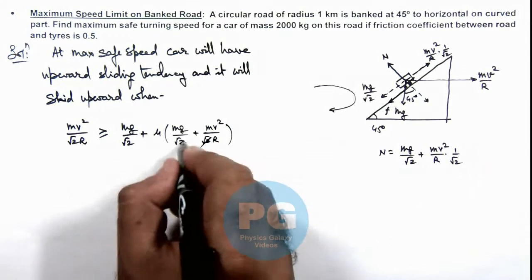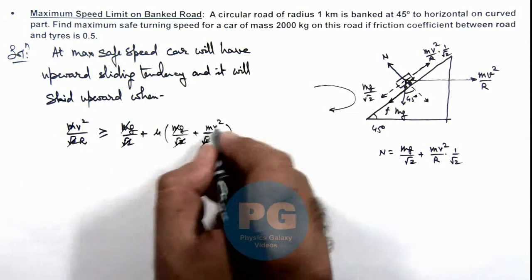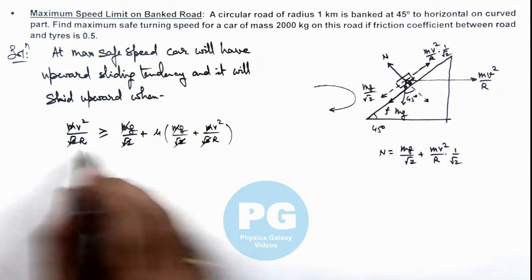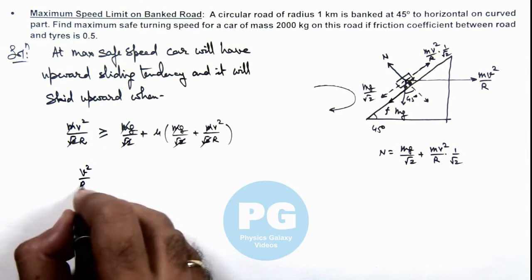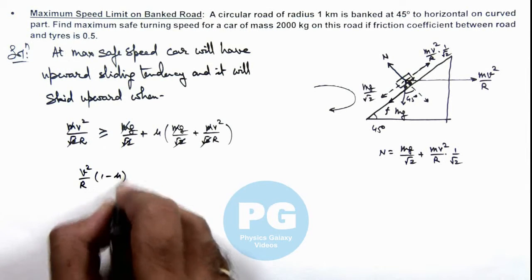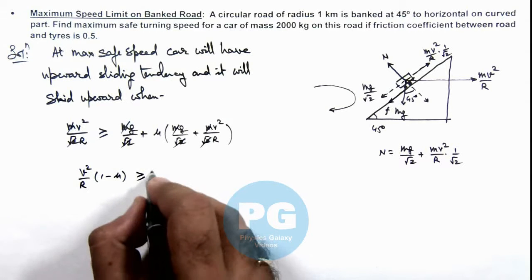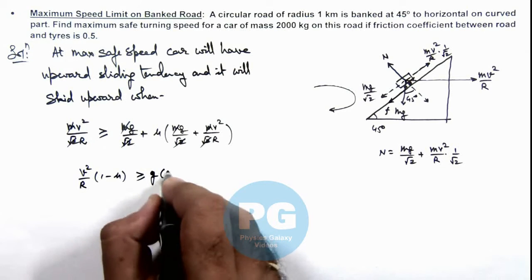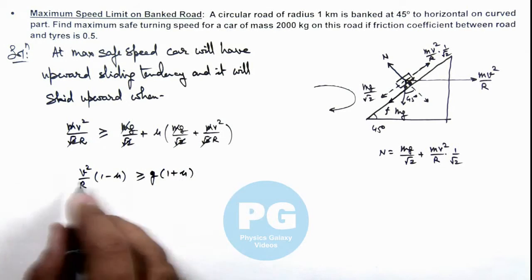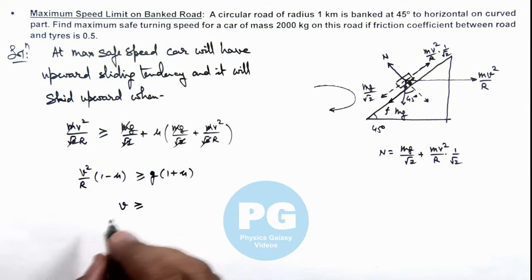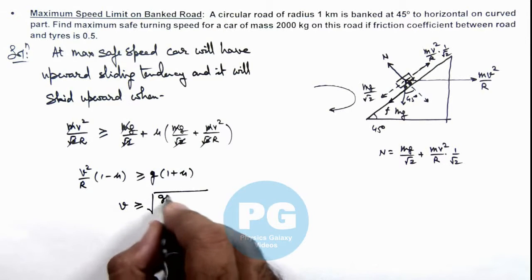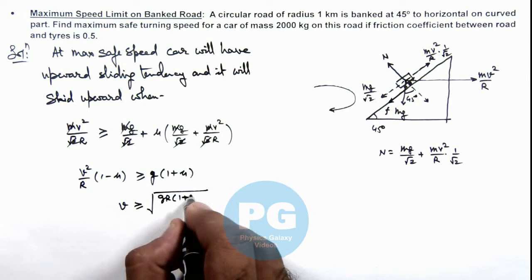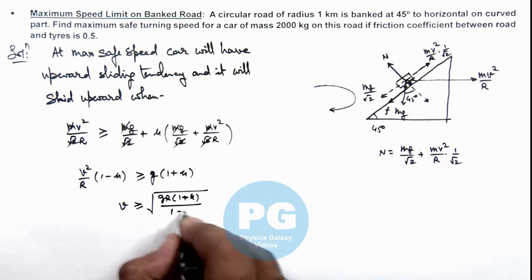Here this root 2 and m gets cancelled out in the equation. Further simplifying we can see this is v square by r times 1 minus mu should be more than or equal to g times 1 plus mu. Further simplifying we are getting the speed to be more than or equal to root of gr multiplied by 1 plus mu divided by 1 minus mu.